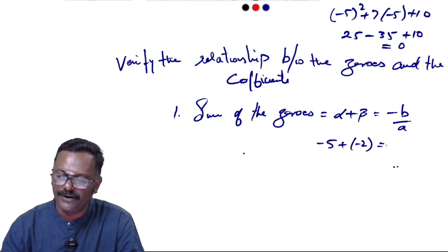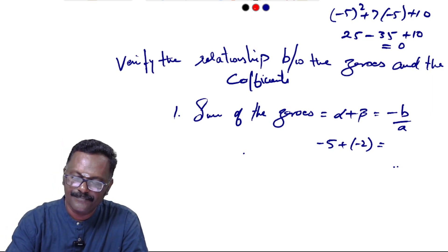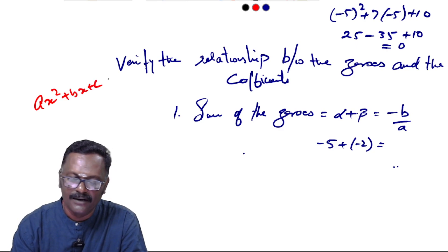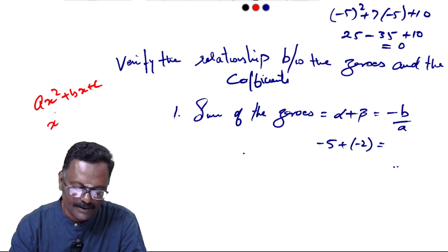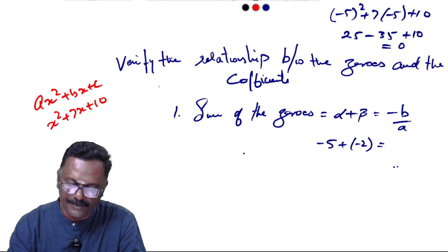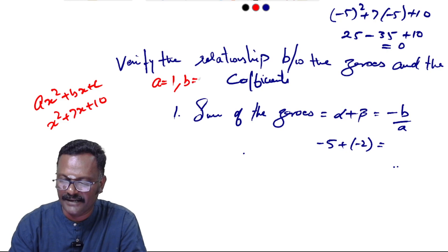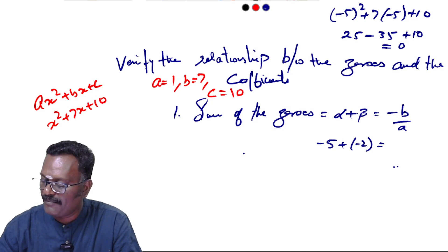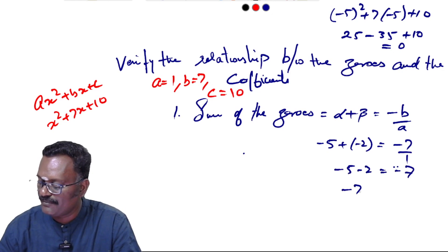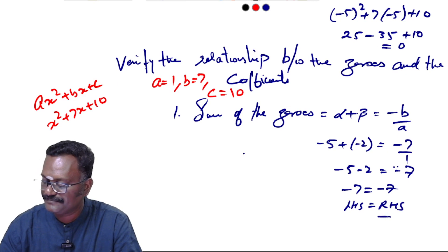Using the general form ax² + bx + c, our polynomial x² + 7x + 10 gives a = 1, b = 7, c = 10. So -b/a = -7/1 = -7. Left hand side: (-5) + (-2) = -7. Left hand side equals right hand side. Verified.